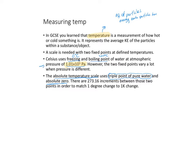Degrees Celsius focuses on the freezing and boiling point of water at a particular pressure, which means it does depend on properties of a particular substance — specifically whether it's at a point where it's changing state, which is a property of matter. But in the absolute scale, the Kelvin scale, it is independent of any physical properties.